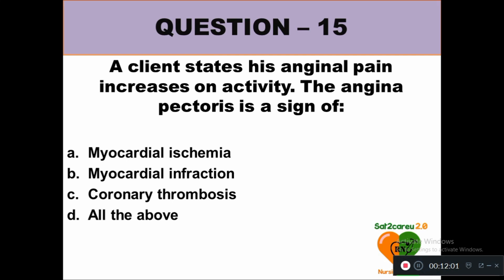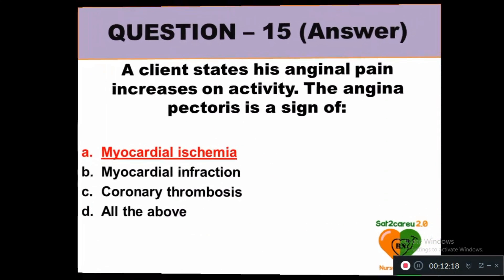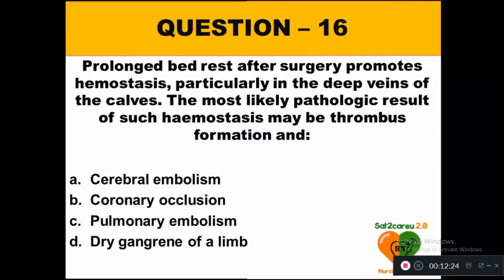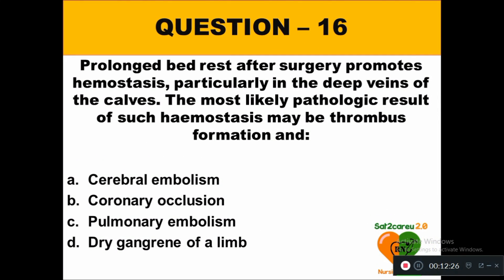Question 15: A client states his anginal pain increases on activity. Angina pectoris is a sign of: option A myocardial ischemia, option B myocardial infarction, option C coronary thrombosis, option D all of the above. The right answer is option A — myocardial ischemia.